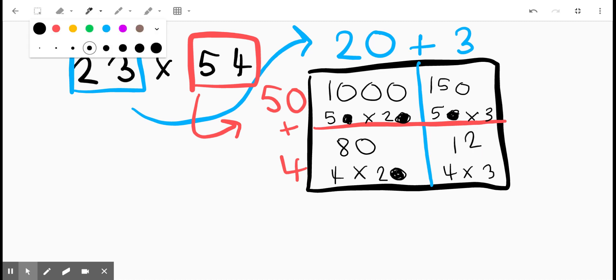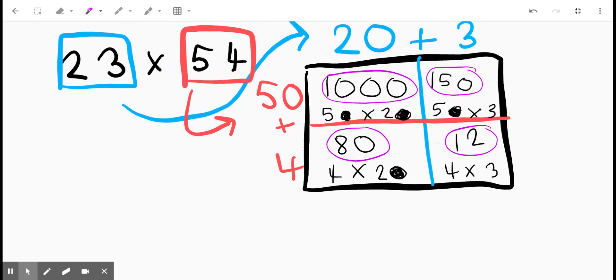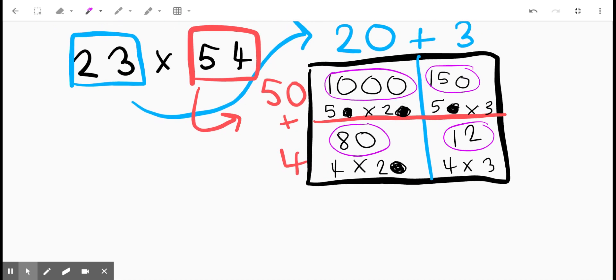So now I have four partial products. I have 1000, I have 150, I have 80, and I have 12. What I have to do with my partial products is I have to add them up. Once I add them up, I'll have my product. So I'm going to add my 150 and my 12.